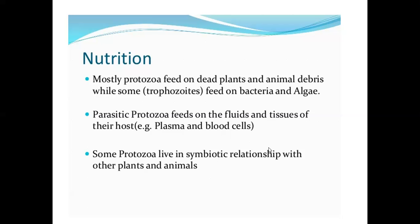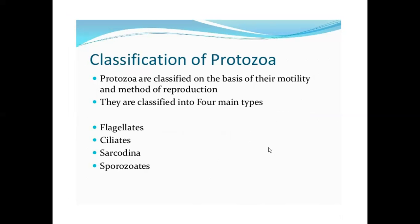Except sporozoans, all types of protozoa are motile — either by flagella, cilia, or pseudopodia. They have eyespots that can detect changes in light and respond to light. Mostly protozoa feed on dead plants and animals, while some sporozoans feed on bacteria and algae. Parasitic protozoa feed on the fluids and tissues of their host — for example, plasma and blood cells. Some protozoa live in symbiotic relationships with other plants and animals.